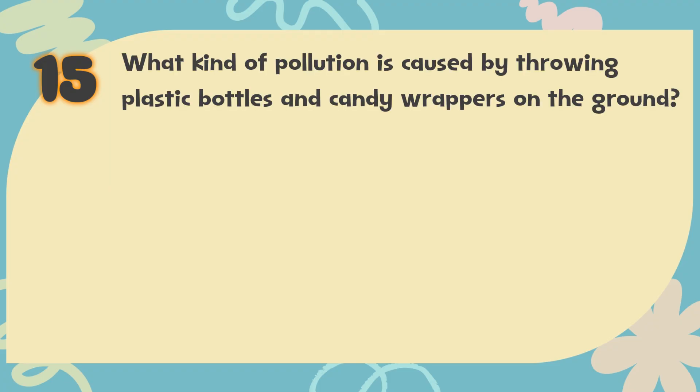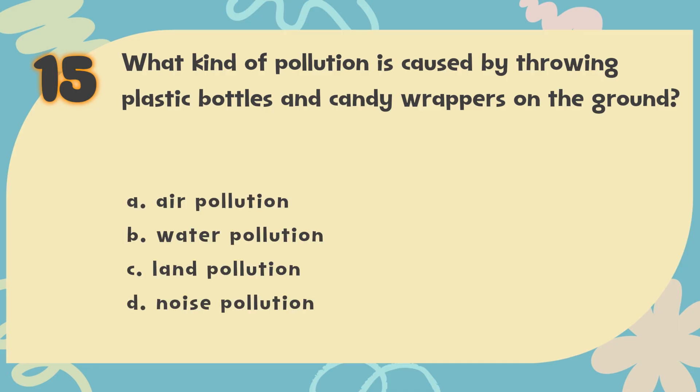Number 15: What kind of pollution is caused by throwing plastic bottles and candy wrappers on the ground? The choices are: A. Air pollution, B. Water pollution, C. Land pollution, D. Noise pollution.